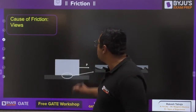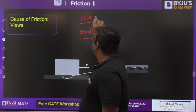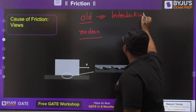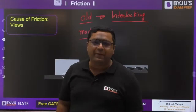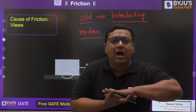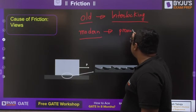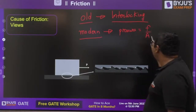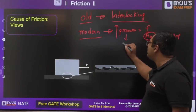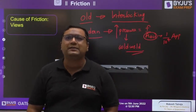We saw the causes of friction from two views. From the old view, friction comes because of interlocking, but it was unable to explain why friction is independent of area, and why extra smooth surfaces are difficult to move. In the modern view, pressure — which is intermolecular forces per unit area — is considered. The actual contact area is found to be 1/10,000 of the apparent area, so as area is very less, pressure increases, causing cold welds, which are the actual reason for friction.